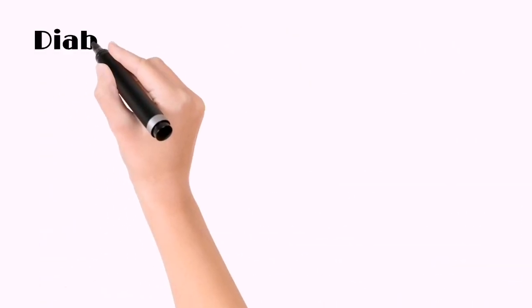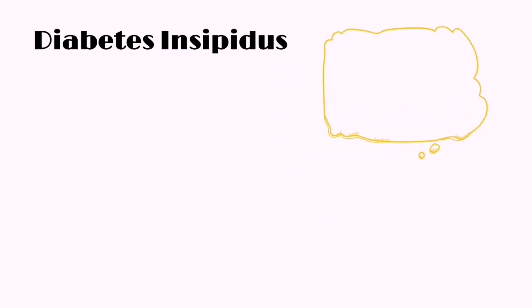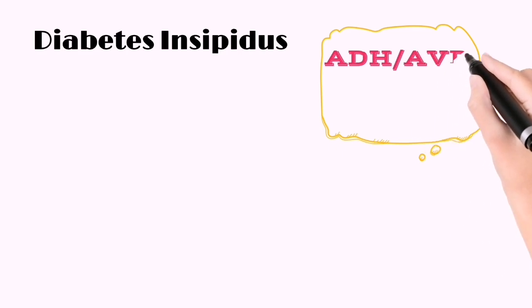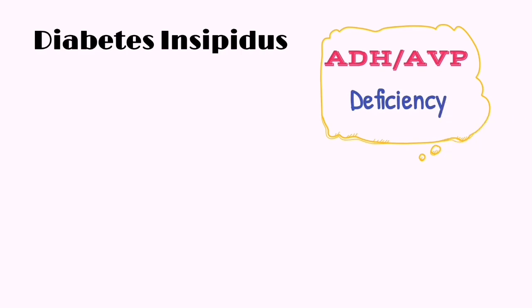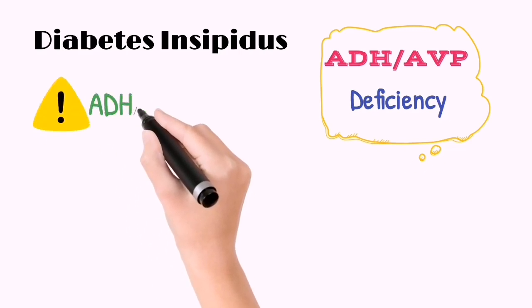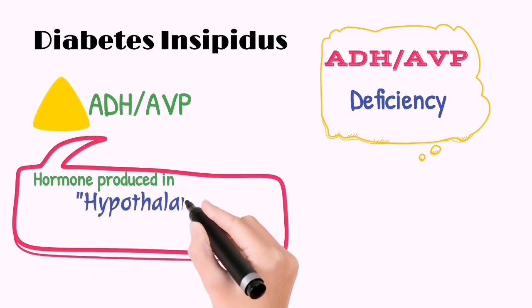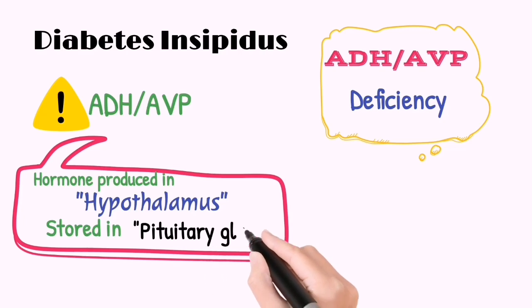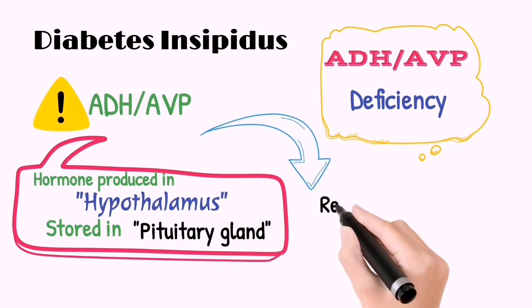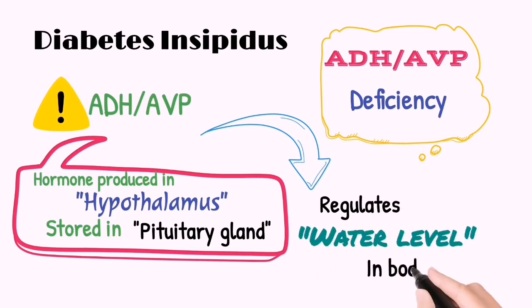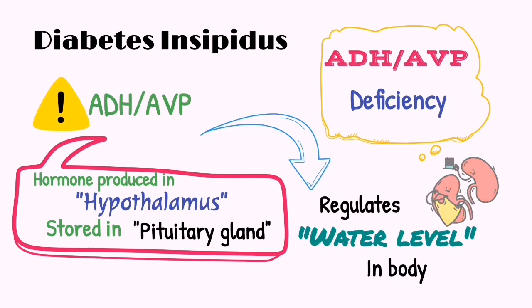How do we define diabetes insipidus? Diabetes insipidus is a disorder caused by antidiuretic hormone, simply ADH, or arginine vasopressin hormone, simply AVP, deficiency. What is ADH or AVP hormone and what are their main roles? These are hormones produced by the hypothalamus of the brain and stored in the pituitary gland. The role of ADH or AVP hormone is the regulation of the water level in the body. If the ADH or AVP level goes down, it will lead to more urination and the body may go into a dehydration state.